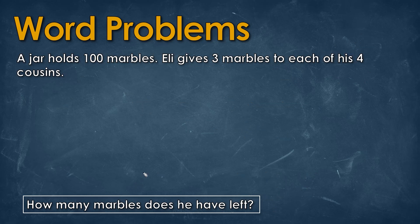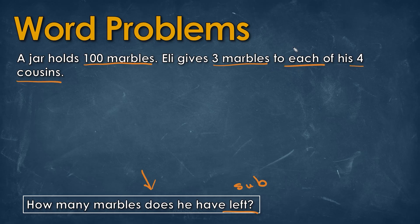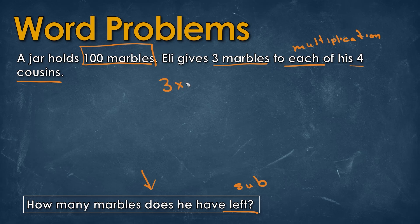Moving on to the next problem, the question asks how many marbles does he have left. The word 'left' tells us we'll be doing subtraction. Reading the question, we have 100 marbles, and Eli gives three marbles to each of his four cousins. The word 'each' means multiplication, so three times four gives us a total of 12 marbles given away.